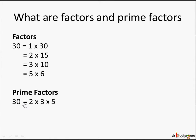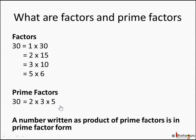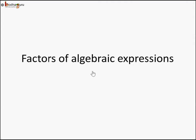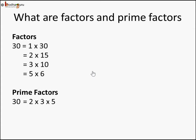So we can represent 30 as a product of these prime numbers: 2 into 3 into 5 also makes 30. So the prime factors of 30 are 2, 3, and 5. A number can be written as a product of its prime factors, and then it is called prime factor form. This is just a revision of what are factors of a number and prime factors, because the goal of this lesson is to know the factors of algebraic expressions.